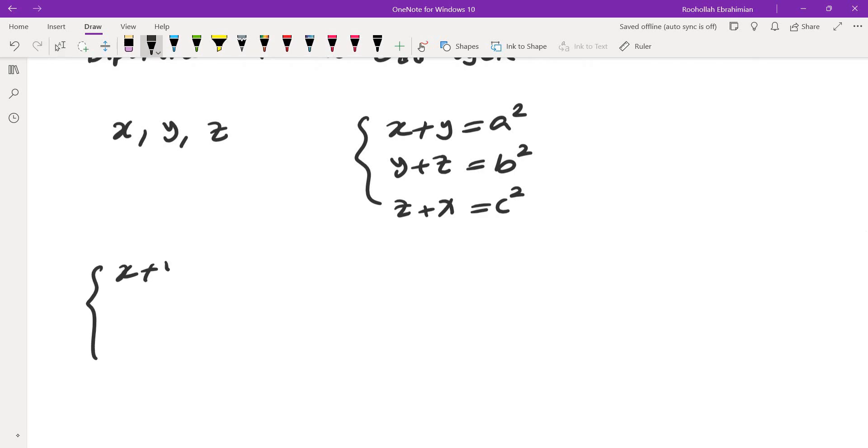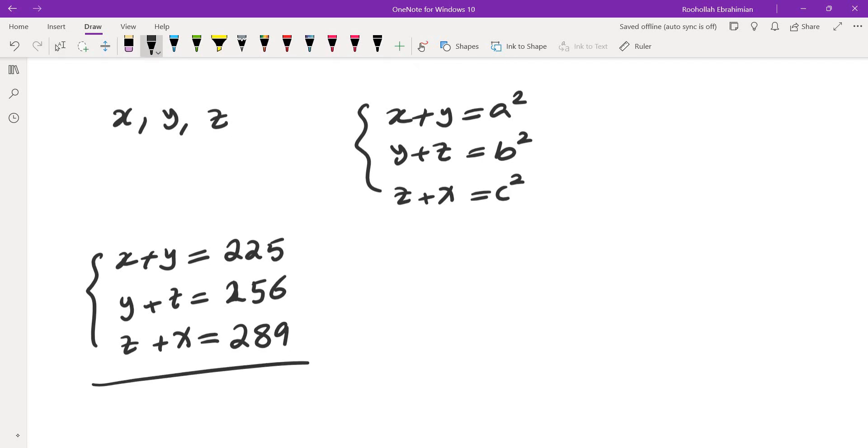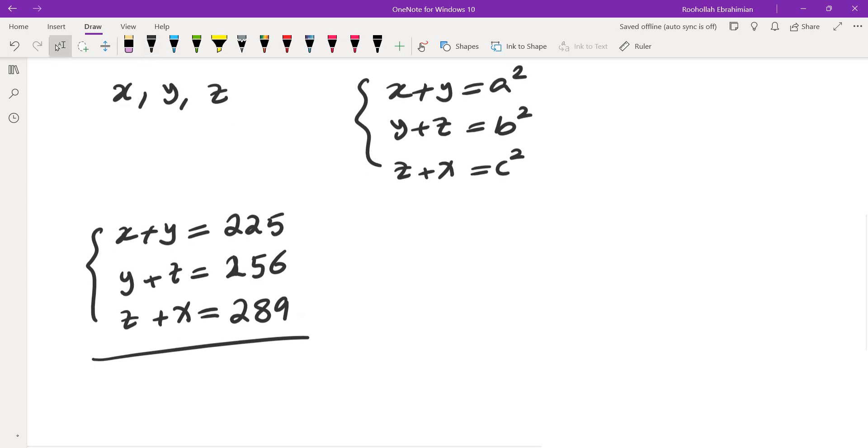So what I did was I started with listing out x plus y, y plus z, and z plus x. And because I wanted to make sure that they are all within the range of 100 to 200, I chose these to be close perfect squares. So if you choose 225, which is 15 squared, 16 squared, which is 256, and then 17 squared, 289, and I solved this one, and I ended up getting that, in fact, that doesn't work because one of the numbers became less than 100.